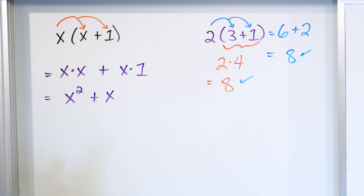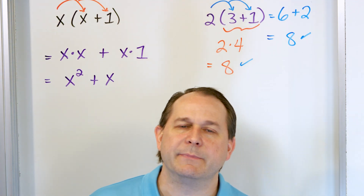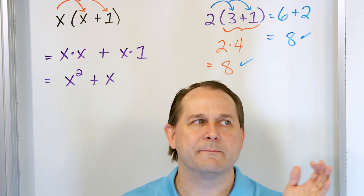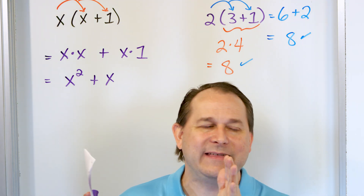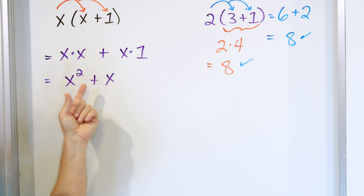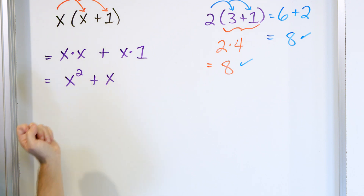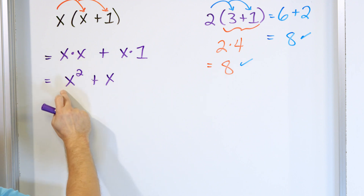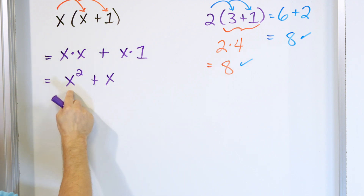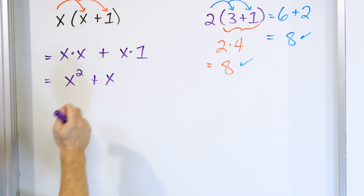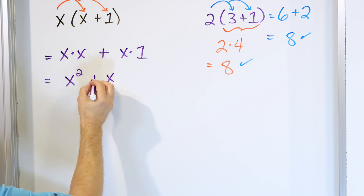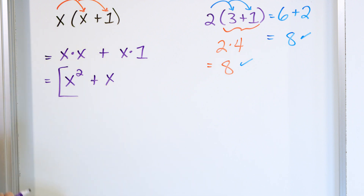Now, here's where a lot of students trip up because they want to combine x squared and x since they both have x's. But you can't do that. In order to combine like terms, the variables must match AND the exponents must also match. They don't match here — x squared is like buffaloes and x is like airplanes. You can't add buffaloes to airplanes meaningfully. So this is done: x squared plus x.